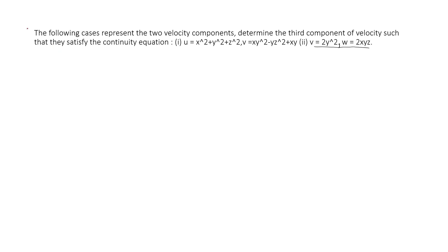Now we will do a problem on the continuity equation. The problem states: the following cases represent two velocity components — determine the third component of velocity such that they satisfy the continuity equation. The first case is u equals x² plus y² plus z² and v equals xy² minus yz² plus xy.